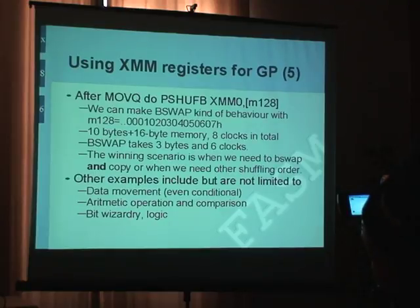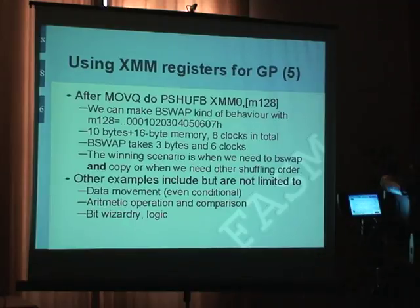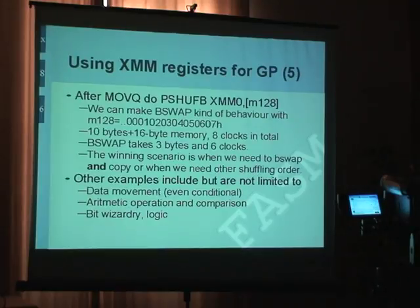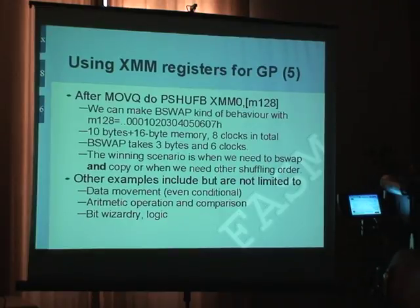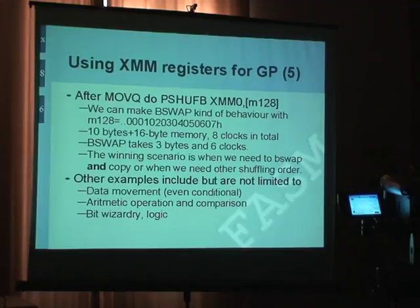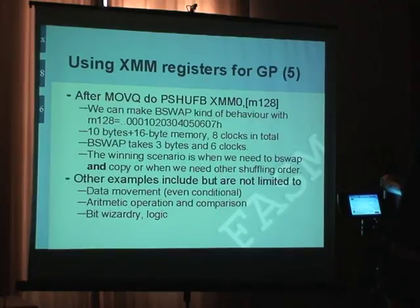Some more examples. After you do your MOVQ, you have your general purpose register and multimedia register, and you can do a shuffle operation. We have a byte swap operation with Intel architecture which swaps the order of bytes in your machine word — whether 32-bit, 64-bit, 16-bit, whatever. With the shuffle operation you can not only change the order but you can put bytes in any order or broadcast one byte to all 20 bytes, and you have two times the memory that a 64-bit data type usually has.